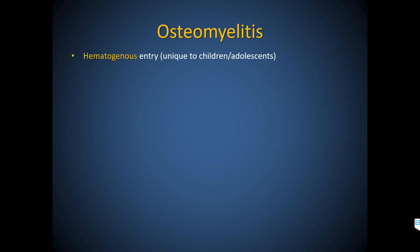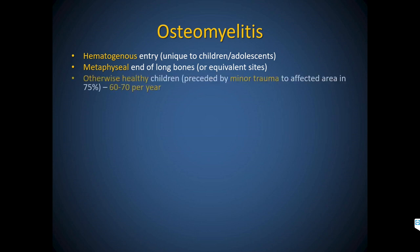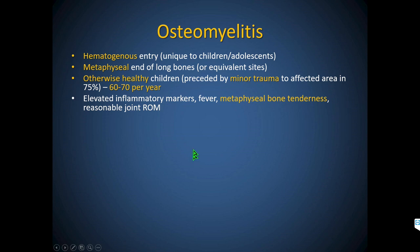Some foundational epidemiology: bone infections come through the bloodstream and are fairly unique to children and adolescents. They involve the metaphyseal ends of long bones, with equivalent sites including the inferior pubic ramus, posterior calcaneal tuberosity, and vertebral end plates. These are otherwise healthy children, often with minor trauma to the affected area — I can elicit that history in about 75% of cases, probably relevant to how bacteria flow to that area following transient bacteremia after trauma.